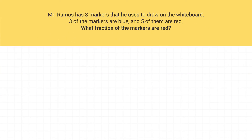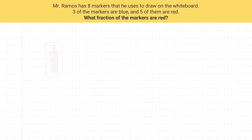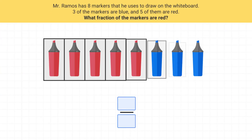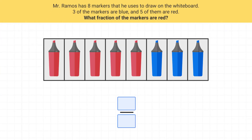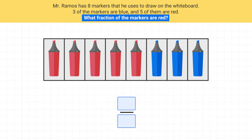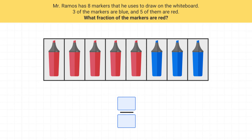We can start by imagining all of Mr. Ramos's markers. The problem asks us what fraction of the markers are red. How many red markers are there? There are five red markers. Where in my fraction should that five go?